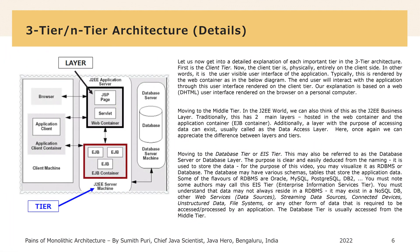Look at this diagram carefully. It is a typical three-tier monolithic architecture that you might have come across in many of your projects. It shows the separation between the physical tiers of presentation, application and database, which are physically disparate deployments. Each of them might have multiple layers, which are logical components based on responsibilities or concerns. This is a typical three-tier monolithic architecture for developing enterprise software.